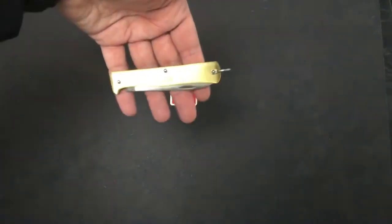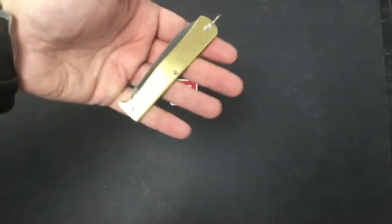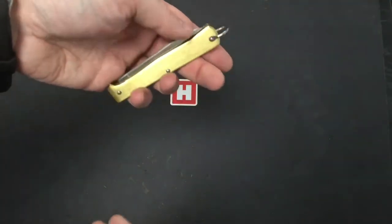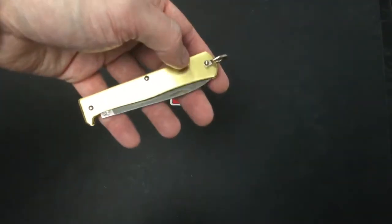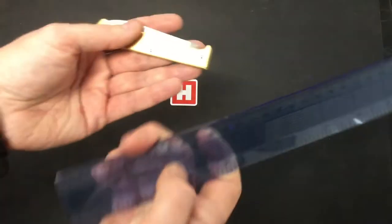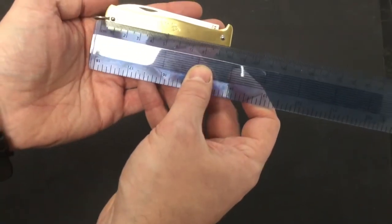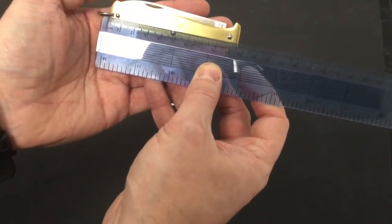There we go in brass, this one UK friendly as the cutting edge is 7.2. The actual blade is 7.7. Closed up we're looking at 9.5.